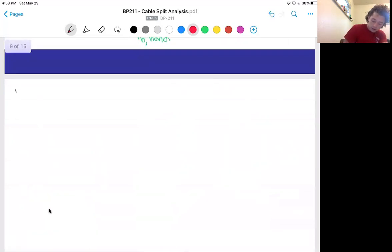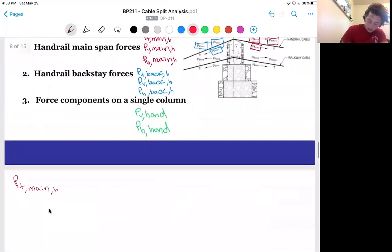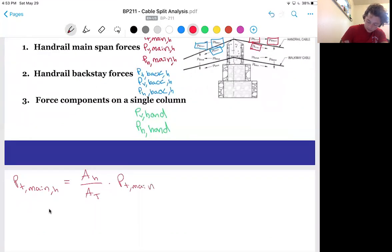So, we have PT mean handrail, and there, equal to area in rail over A total.